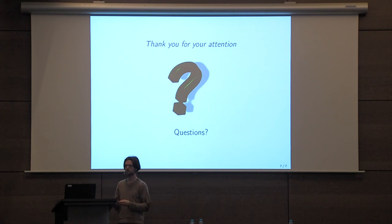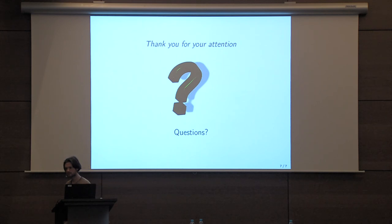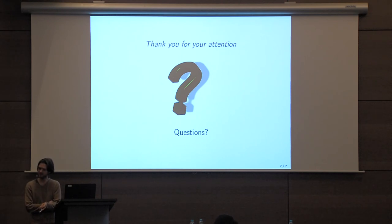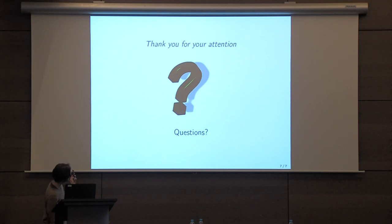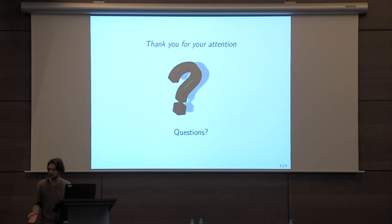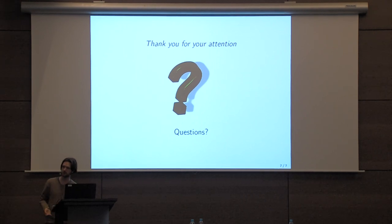Is your reduction uniform or non-uniform? And how is the concrete security loss — is it terrible or okay? On the uniform/non-uniform question, I'm not sure exactly what it means precisely — let's take that offline. But the concrete cost of the reduction is essentially ε³/100, where ε is the winning probability of the adversary. So we lose a factor of ε² compared to the previous reduction that reduces to the stronger RSA assumption.